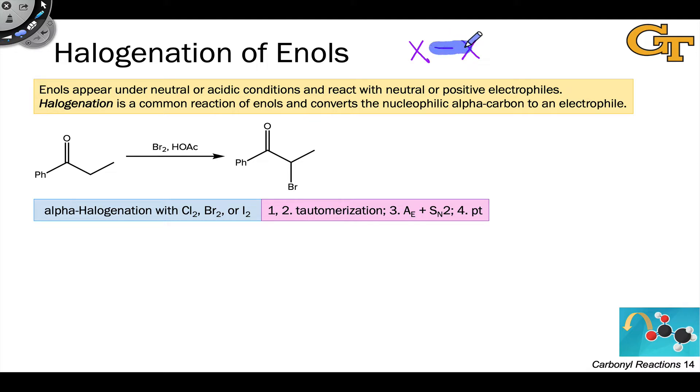X2 is electrophilic because we can think of one of the halogen atoms as a good leaving group. This means that the other halogen atom in some sense wants to accept a pair of electrons, which is our definition of a good electrophile.